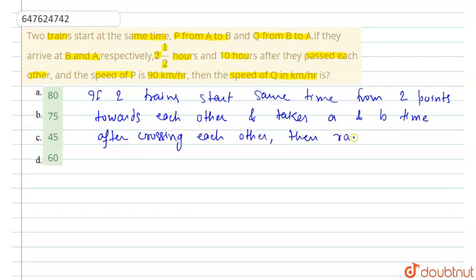then ratio of their speeds is equal to root B is to root A. And we will use this rule. Now,